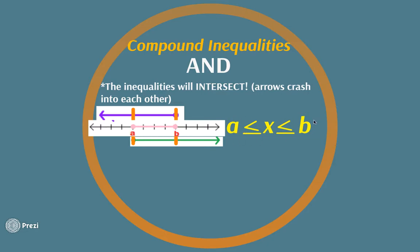AND inequalities are always set up so that the number on the left-hand side goes first and the number on the right-hand side goes last, and the inequalities must always face the same direction. These are the values where the portion in between is greater than a but less than b on a number line. Since both are closed bubbles, both include equal to, so your answer looks like: a ≤ x ≤ b.